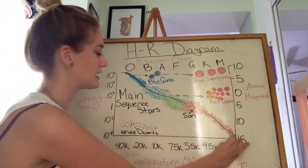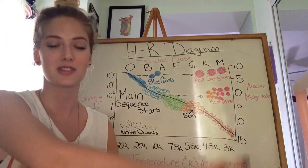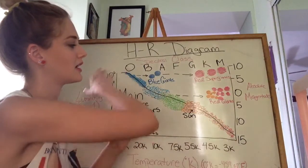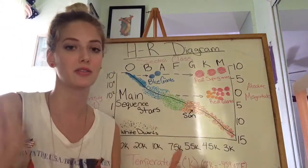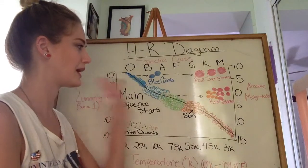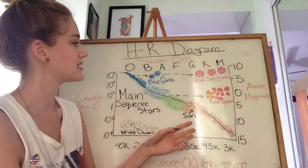So right along here is the main sequence stars. This is just an easy way, this is the majority of the stars in our universe and in our galaxies. You have a really wide range here, but I'm going to go into specifics here.